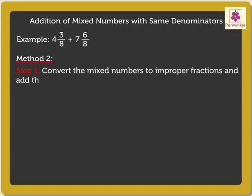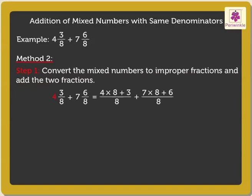Method 2, Step 1: Convert the mixed numbers to improper fractions and add the two fractions. Thus, 4 and 3/8 equals (4×8+3)/8, and 7 and 6/8